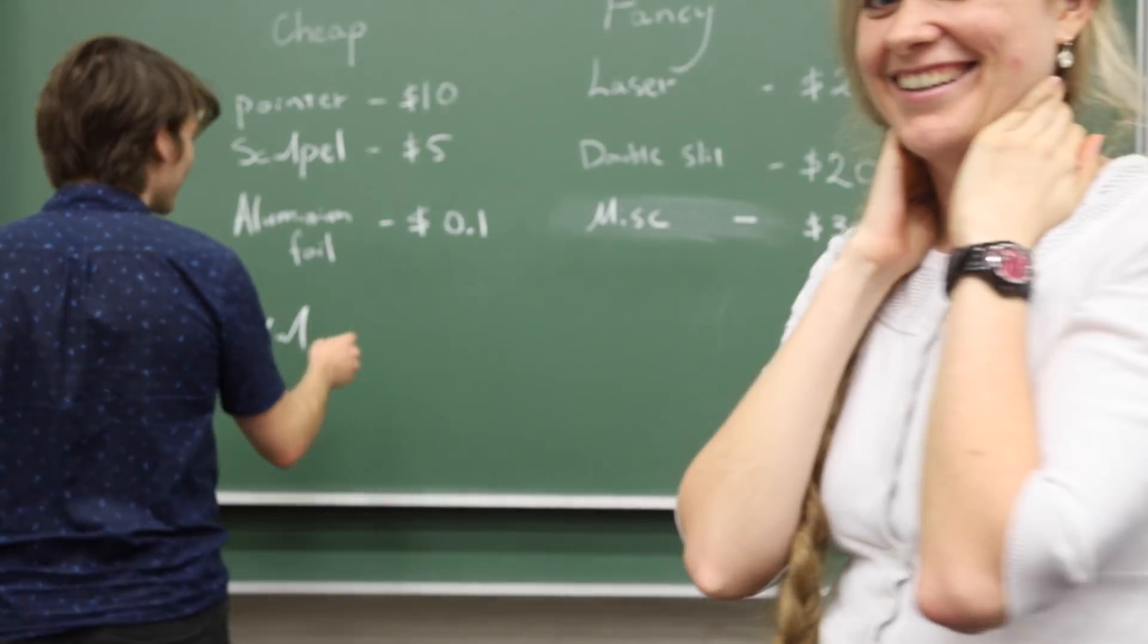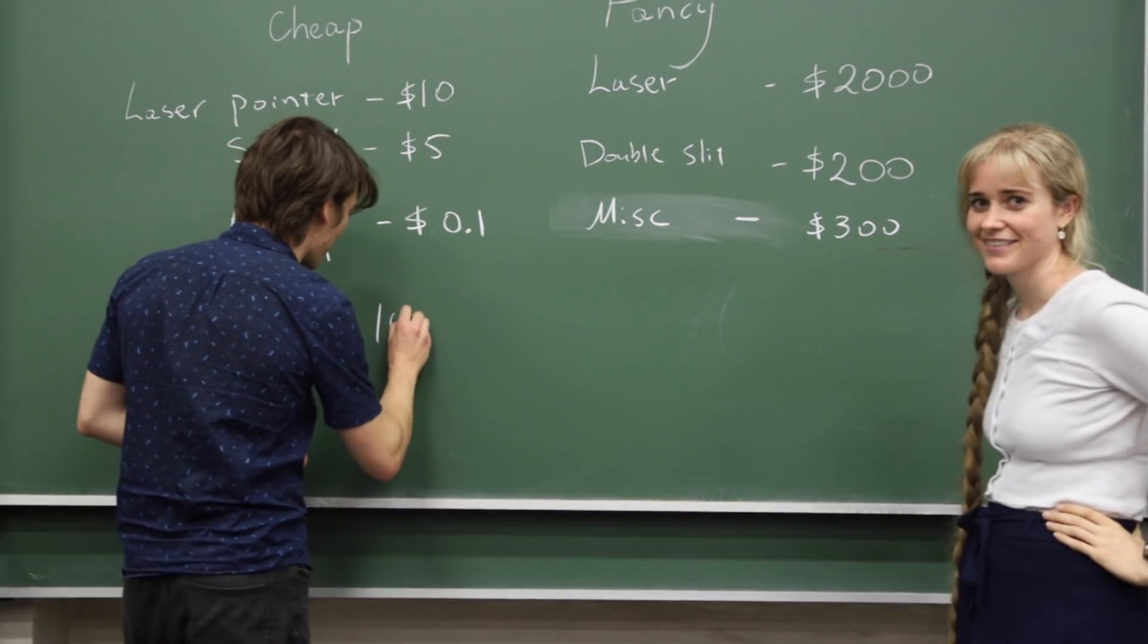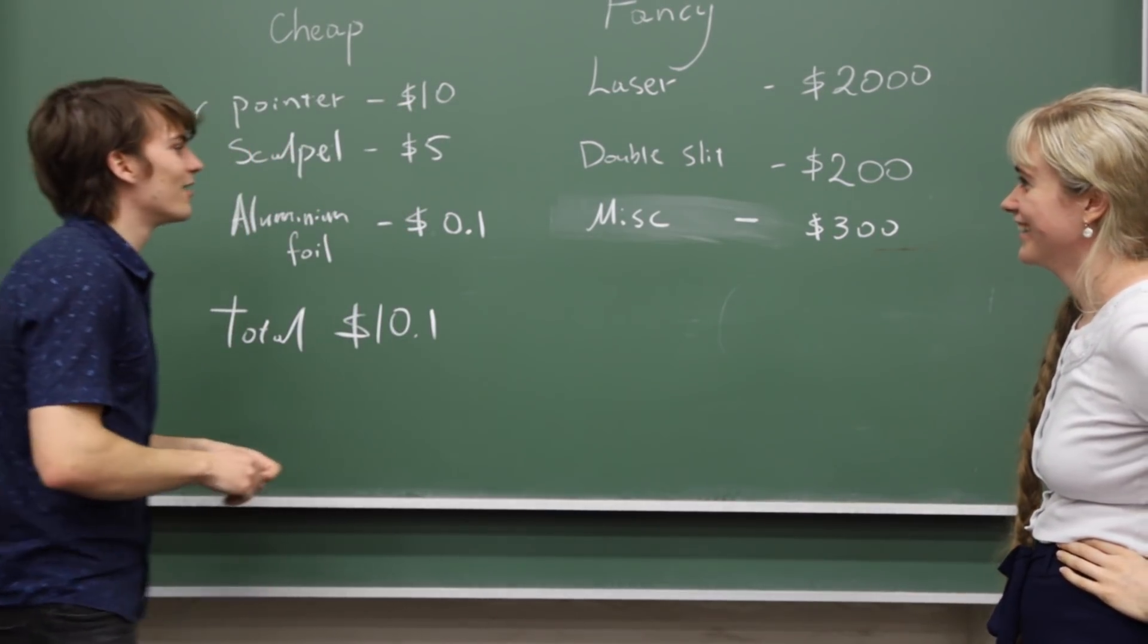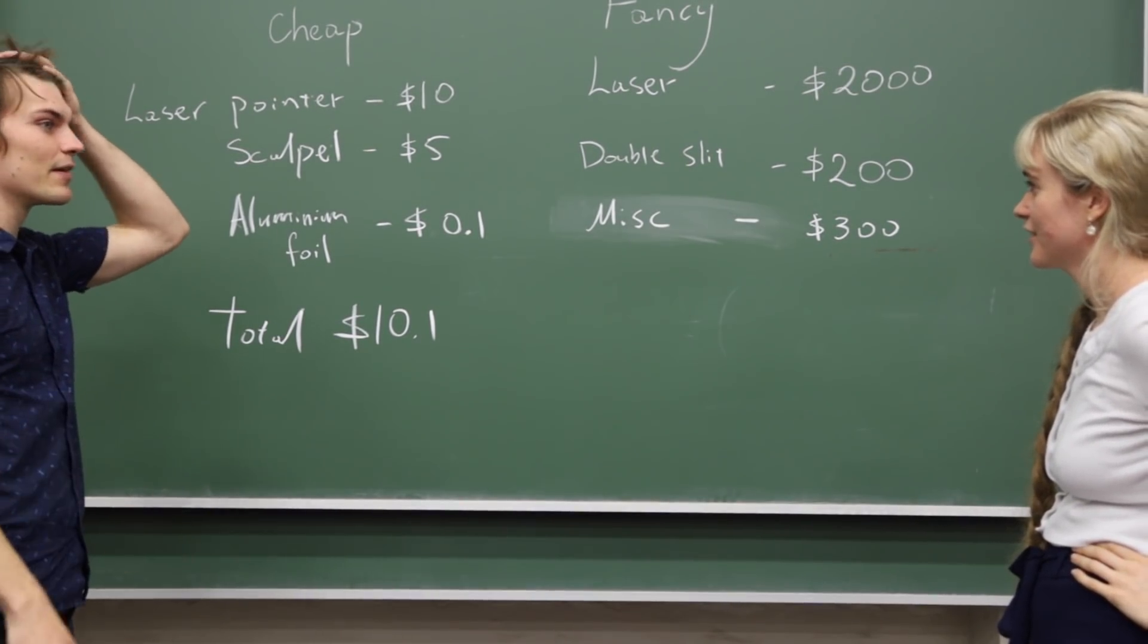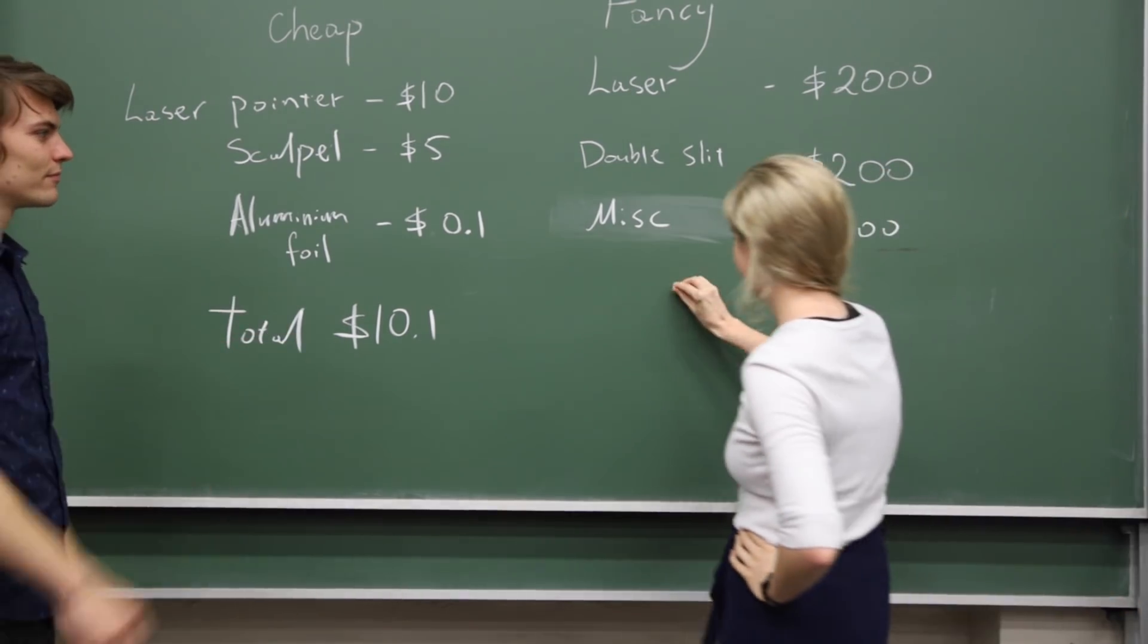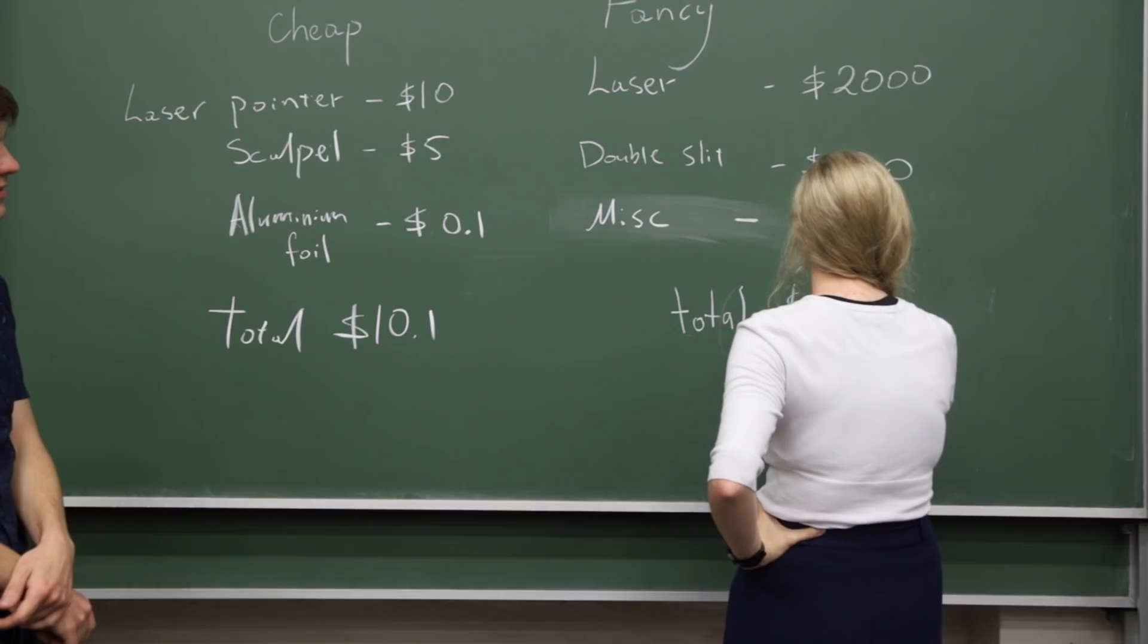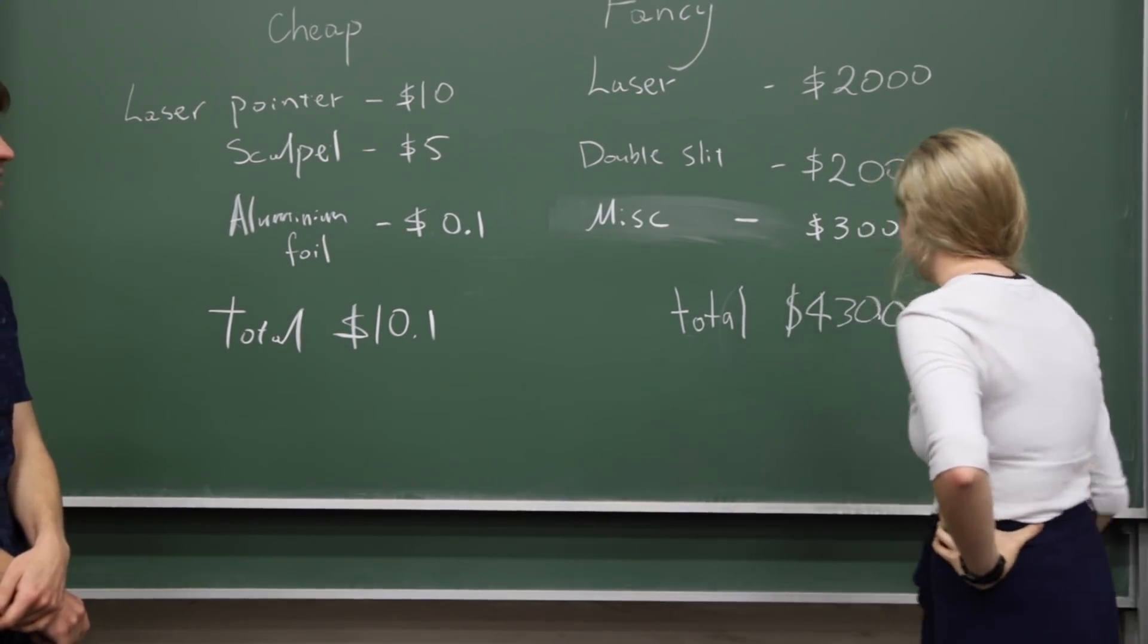The total for the cheap experiment works out to be ten dollars and ten cents. That's reasonable. Australian, so like a little bit cheaper US, so like eight dollars something, seven dollars something. And the total for the fancy experiment—total is okay, 300. I think you've added a zero. I think you've added a zero there.